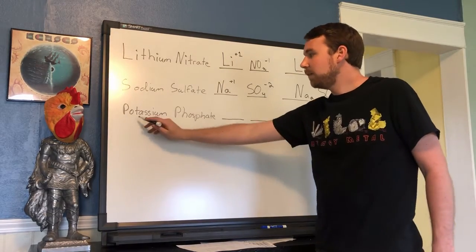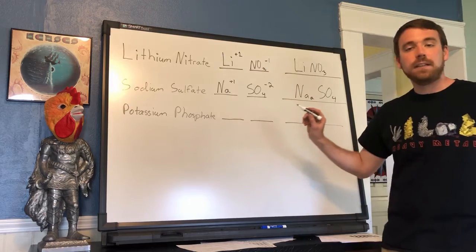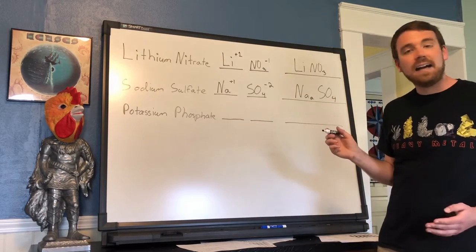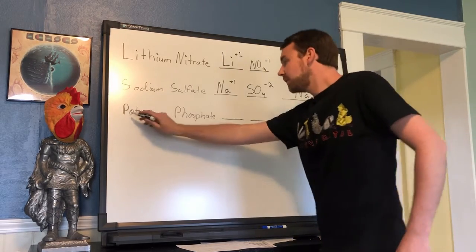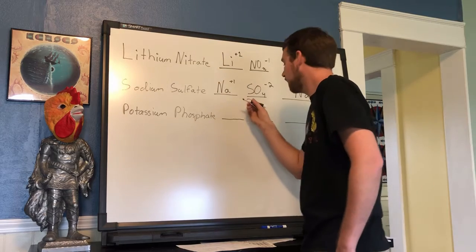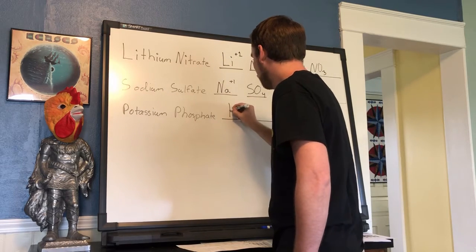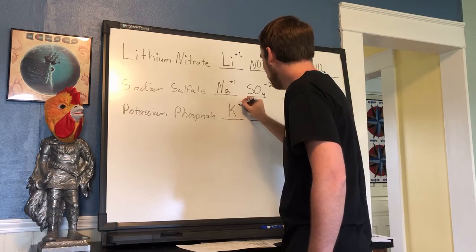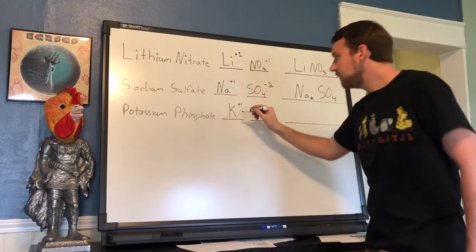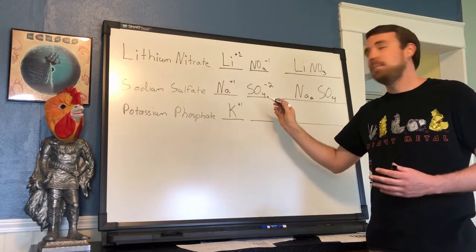Last example we have is potassium phosphate. Our cation is K with a charge of plus one. All of these happen to be alkali metals.